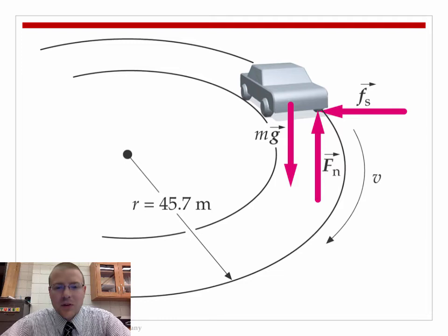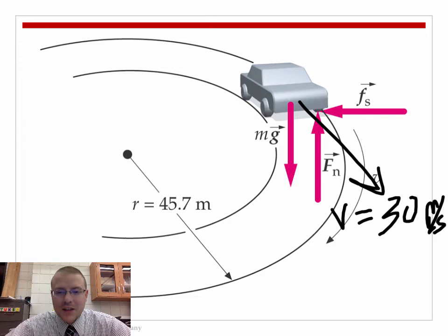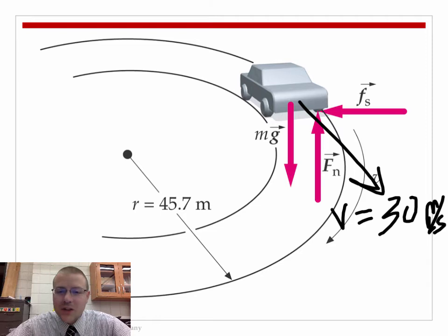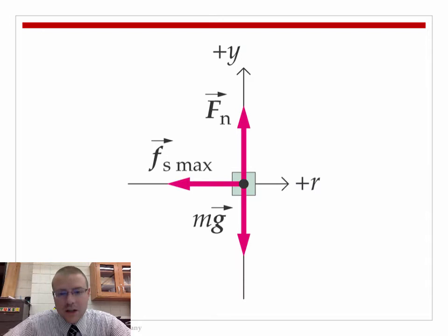Let's do the problem with a car rounding a bend. The bend has a radius of 45.7 meters. The question is: what is the safe velocity — how fast can you go around this bend without your inertia taking over and leaving the circle? Here's the force diagram: gravity down, normal force up, and friction force inward toward the center of the circle. In this case, friction is your centripetal force.